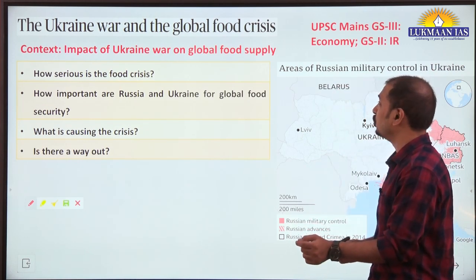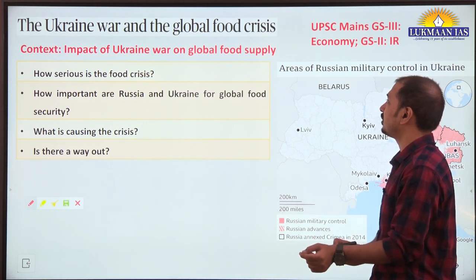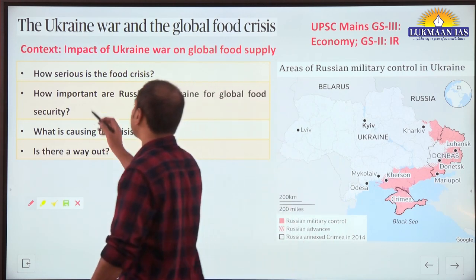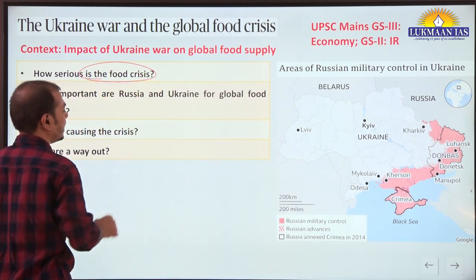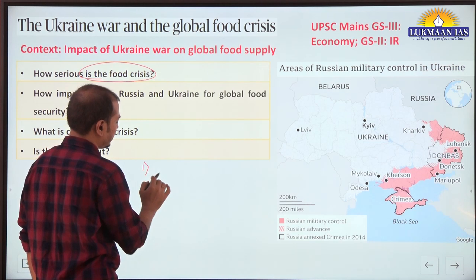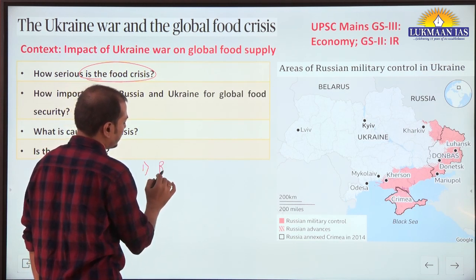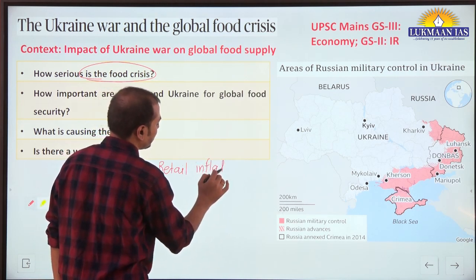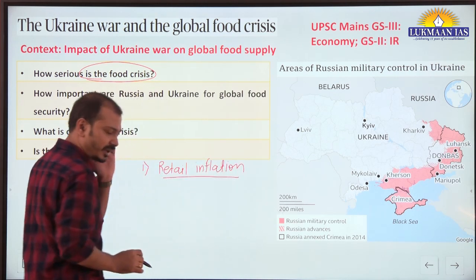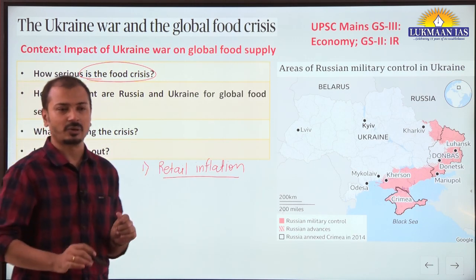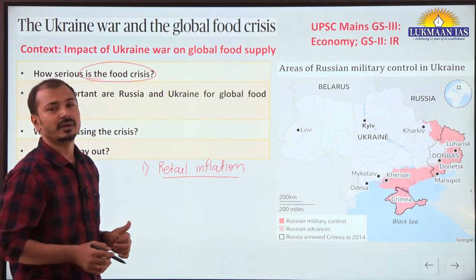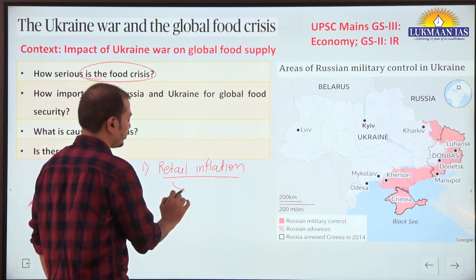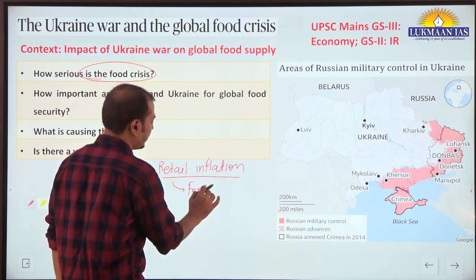The first article in detail is related to the Ukraine war and its impact on global food supply. How serious is the food crisis at present? First, you should know there is galloping retail inflation at present all around the world - not only in developing or underdeveloped countries, but also in developed countries like the US and UK - very high levels of retail inflation fueled by high food prices.